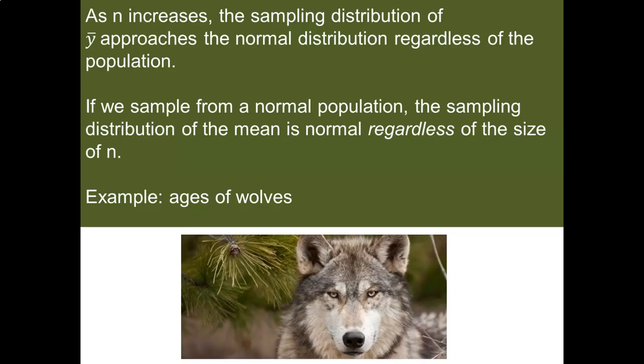We're going to look at an example using the ages of wolves in Minnesota. The key point is that as n increases and we collect more information, the sampling distribution of x-bar approaches a normal distribution regardless of what the population looks like. If we sample from a normal population, the sampling distribution of the mean is normal regardless of the size of n. An exercise will step you through viewing how the distributions change depending on the sample size.